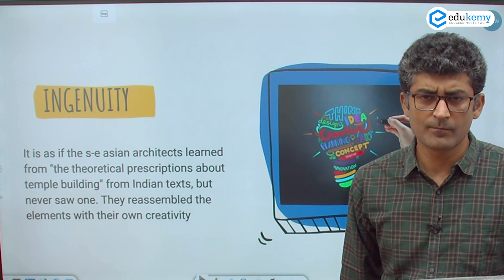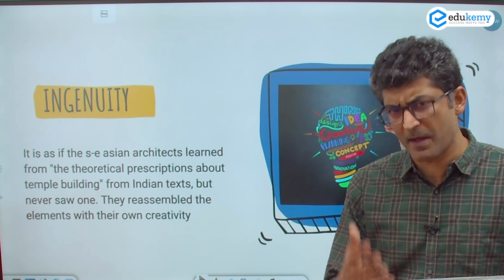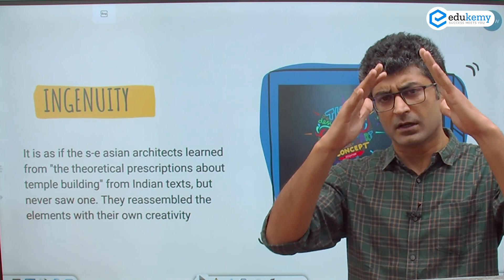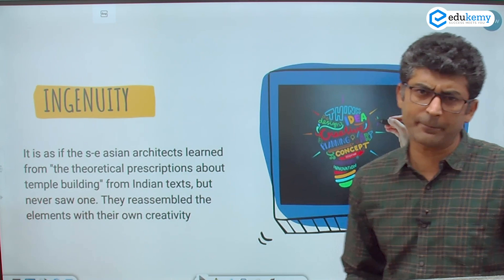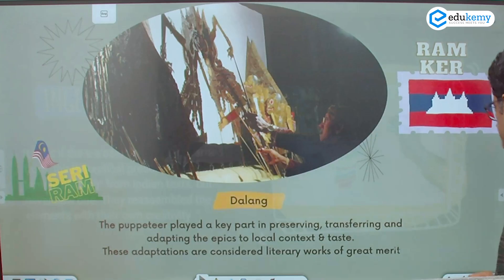Mount Meru, which is considered the heavenly abode of gods — primarily Shiva — is believed to be a five-tier mountain. From the cosmology of Mount Meru, Southeast Asian societies were very, very inspired.